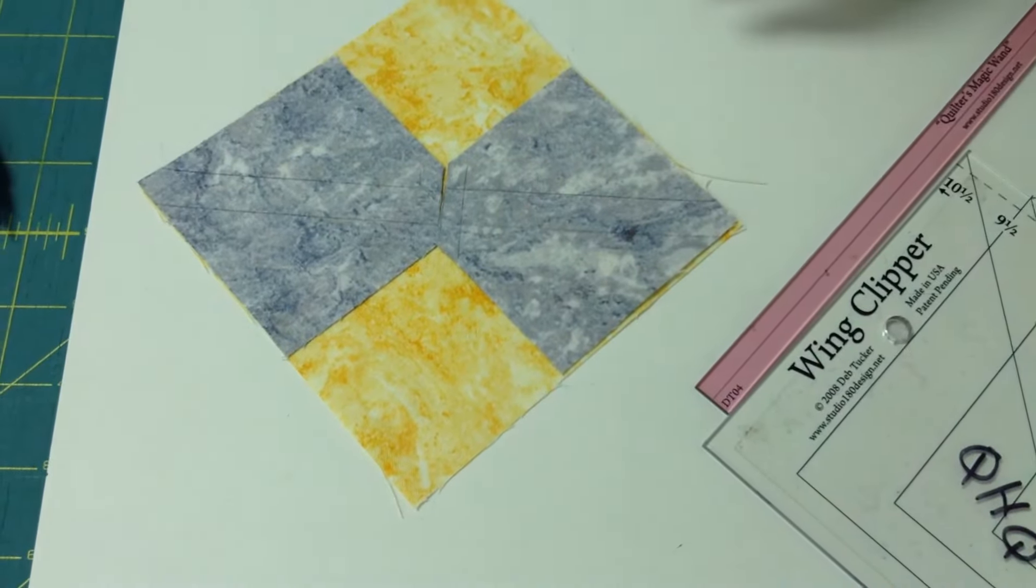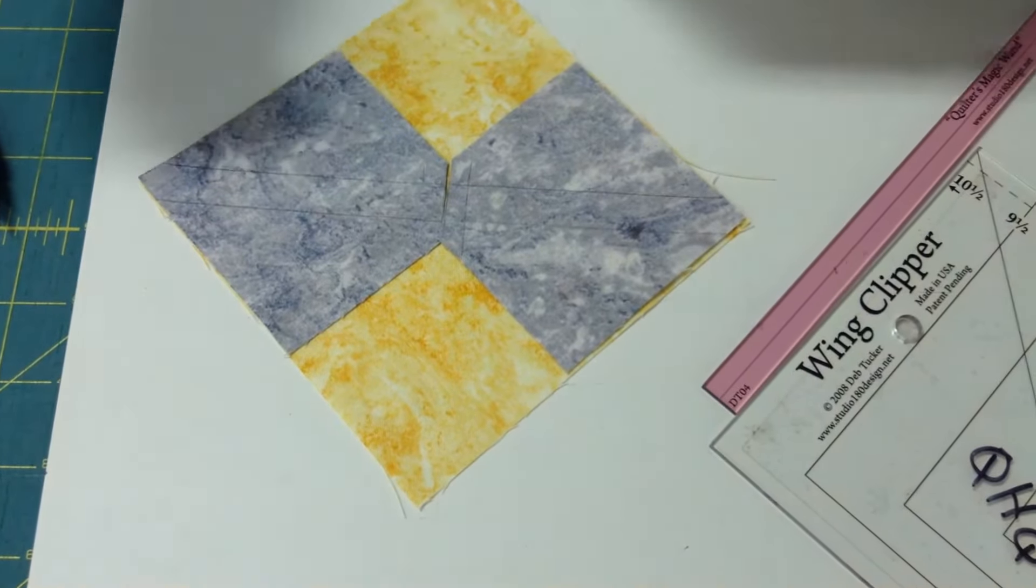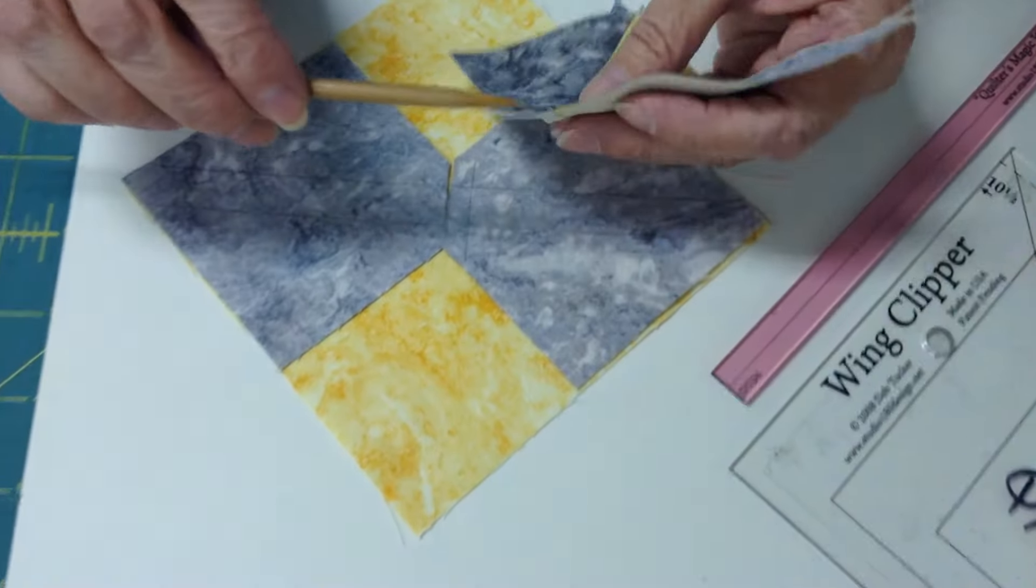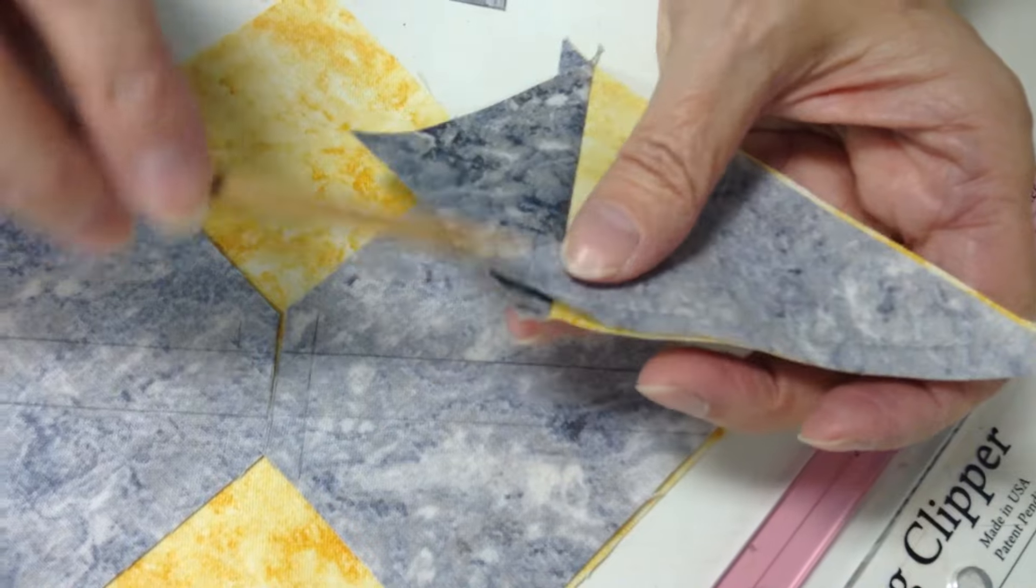That will eliminate that extra piece in there that you will no longer have, reducing all the bulk. See, no extra piece in there at all. Just the two that you need.